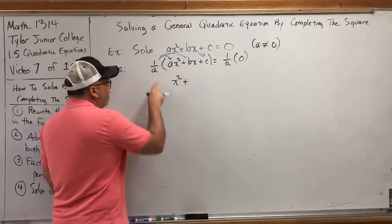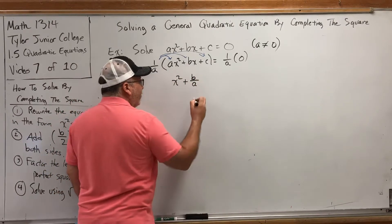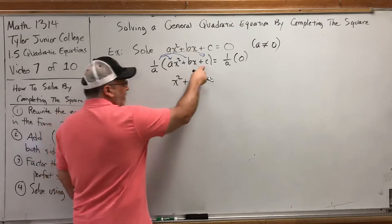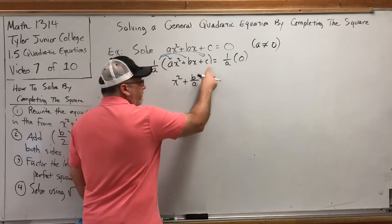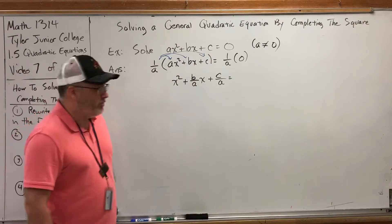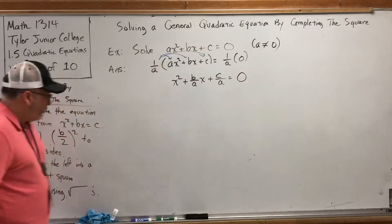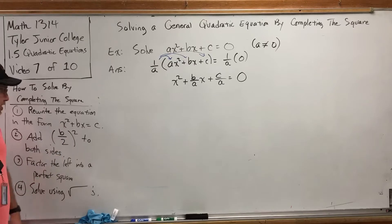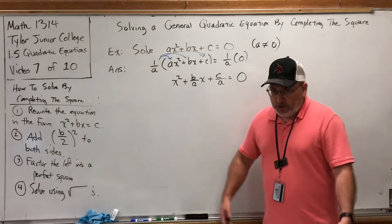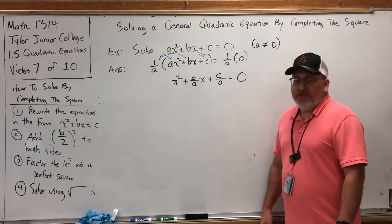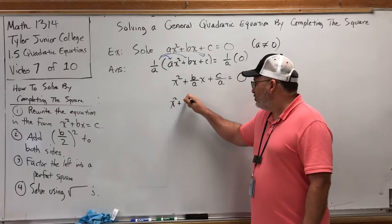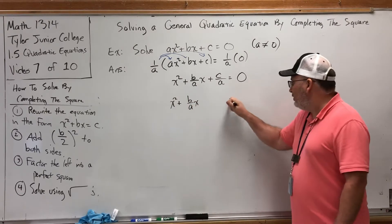The rest of it is not as pretty. One over a times b is b over a — that is still the coefficient of the x — plus one over a times c, which is c over a. The right side of the equation is easier: one over a times zero is zero. So we've got the x squared, but we need the constant term on the right side of the equal sign. The constant term is the term without the variable, so it's this plus c over a. We need to move it to the right side by subtracting it from both sides, and that will give us x squared plus b over a times x equals negative c over a.